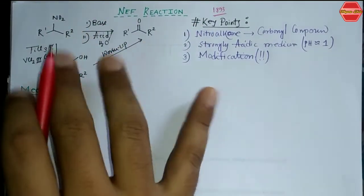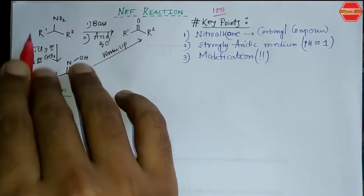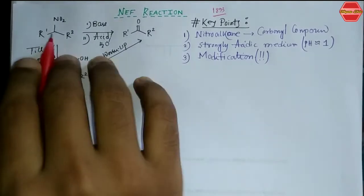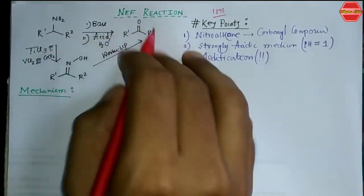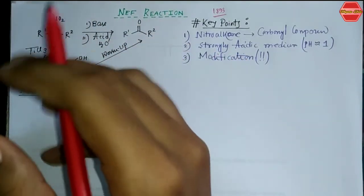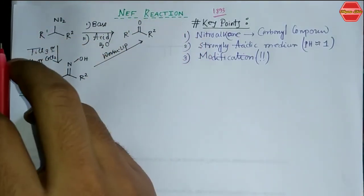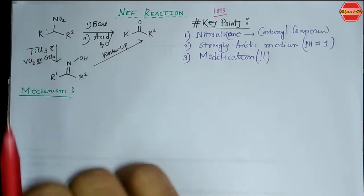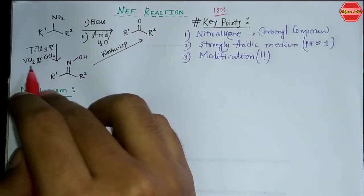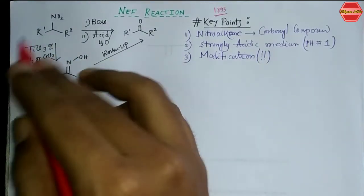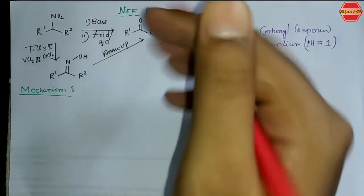This reaction converts a nitroalkane into a carbonyl compound. There are different kinds of procedures. First, if we have a nitroalkane and treat it with a base followed by acid hydrolysis, we get a ketone. Another method uses reductive conditions, specifically titanium trichloride (TiCl₃) or salts like CrCl₂ or VCl₂. This first forms an oxime derivative, and after acidic hydrolysis you get the ketone product.